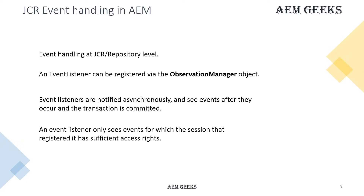Event listeners are notified asynchronously. For example, if five events are triggered at exactly the same time, there is no priority — any event could be notified first. Also, only the events for which the session has permissions will be notified to the event listener.